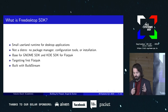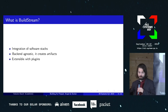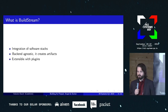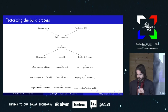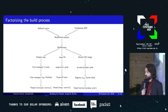We first target Flatpak, but we want to also target other things. It's built with Buildstream. Buildstream is not the tool used for Flatpak to build applications — we use it for FreeDesktop SDK because it's much more general. It's a tool for integration of software stacks. It doesn't care about the back-end or where you distribute; what it cares about is building. It has artifacts and it's extensible with plugins. You can use Buildstream for your application, use the FreeDesktop SDK, and generate Flatpak repositories, Snap files, or Docker images.